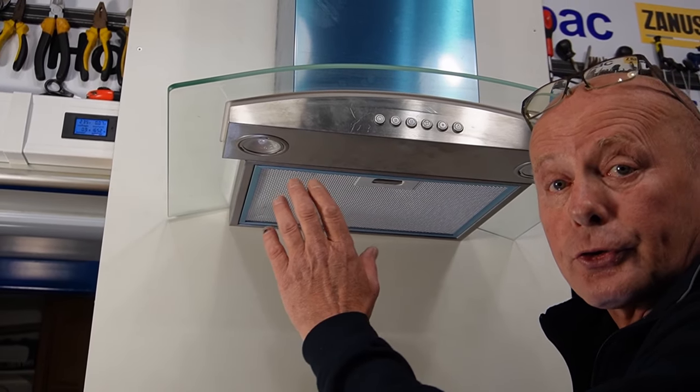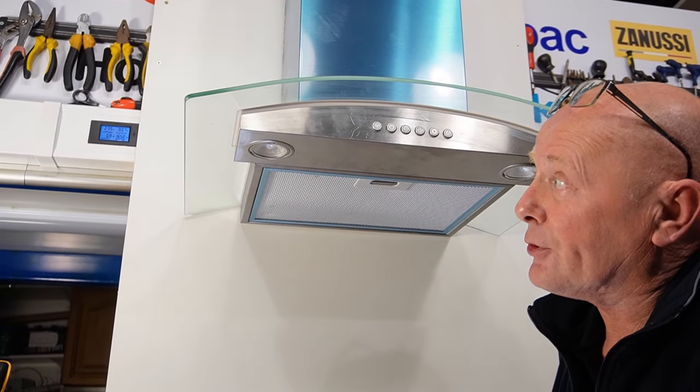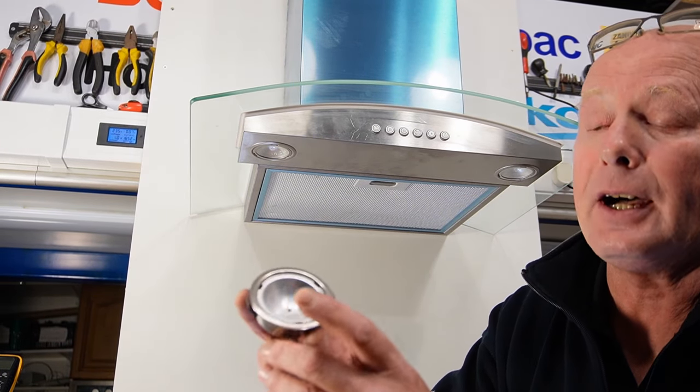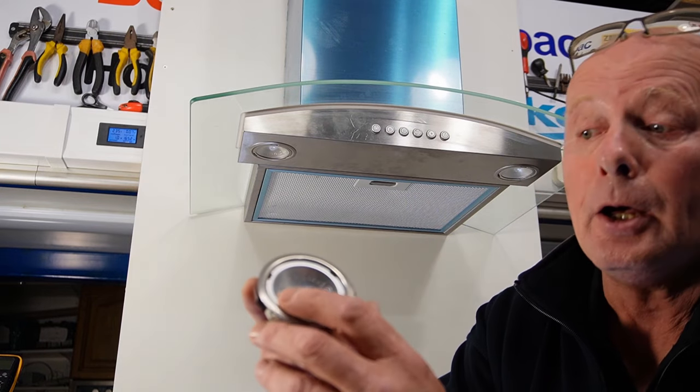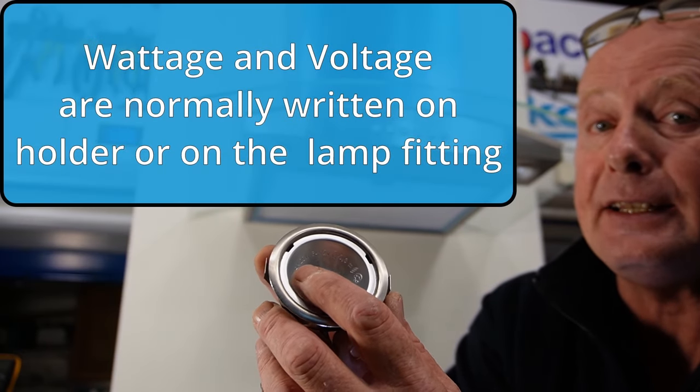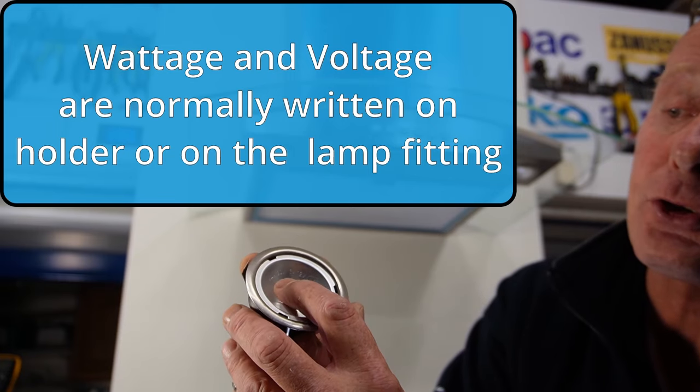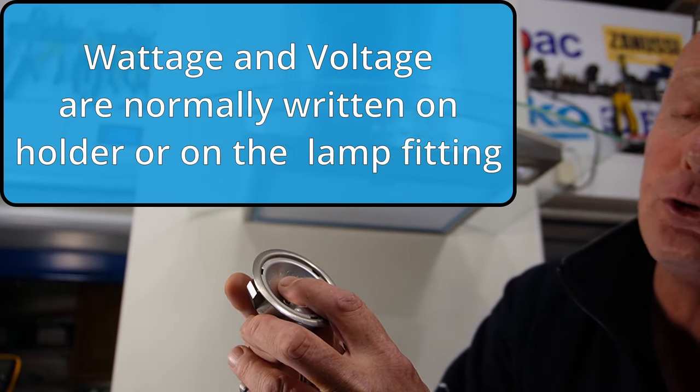On some cooker hoods the light bulb unit is only sold as a complete unit. Sometimes you will have to identify the bulb by looking closely in the actual bulb holder and you can see here it says 20 watt 12 volt G4.